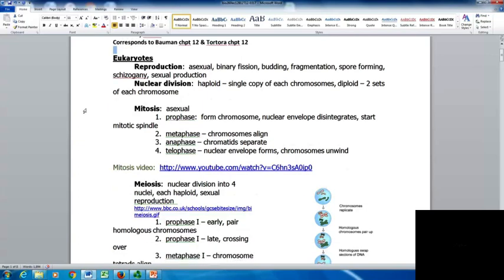Mitosis is your asexual division, the division of the nucleus. There are four main phases. With prophase, you form the chromosome, your nuclear envelope disintegrates, and you start to form the mitotic spindle. In metaphase, chromosomes align along the mitotic spindle. In anaphase, chromatids begin to separate. Finally, in telophase, you make a new nuclear envelope, chromosomes unwind, and you go back to having two new daughter cells. There are several video animations I recommend watching.